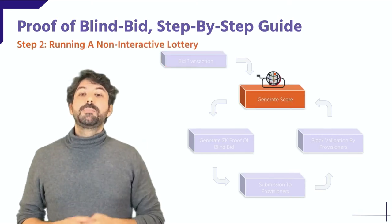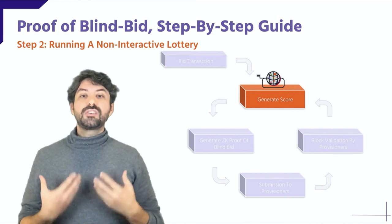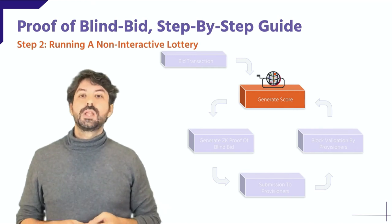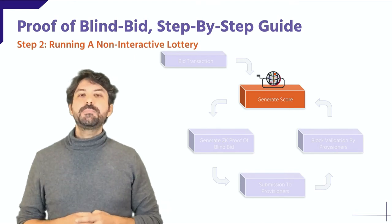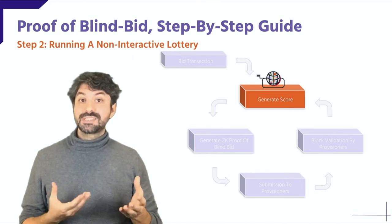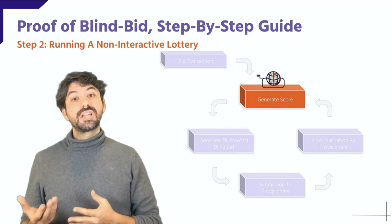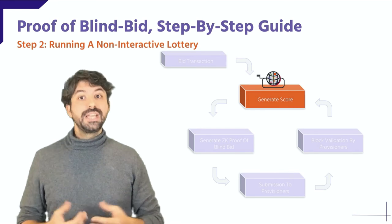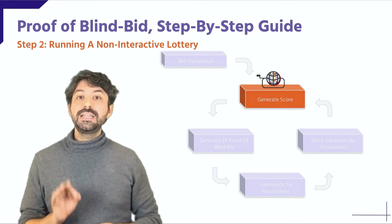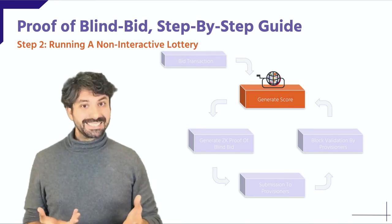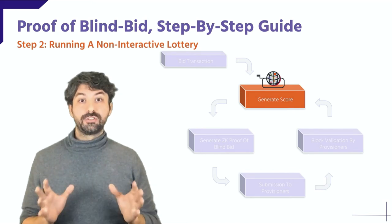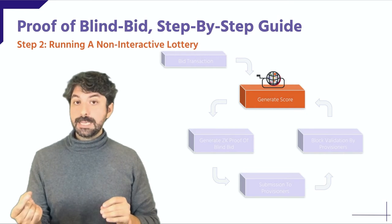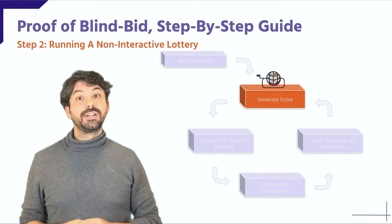From this point on, the participant who propagated the bid transaction is able to participate in Step 2: the Blind Bid Lottery. The participant runs a non-interactive lottery by executing the generate score procedure. This function takes as input the amount of Dusk committed in Step 1 and a pseudonymous identity, and returns a score. This score is a number that is probabilistically linked to the amount of Dusk committed. In essence, the winner of the lottery is the one with the highest score — the higher the initial stake, the higher the probability of obtaining a higher score.